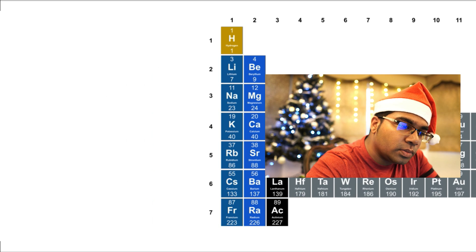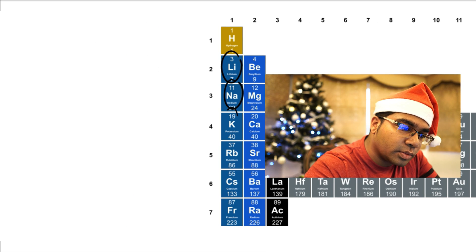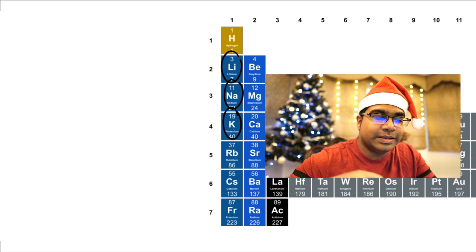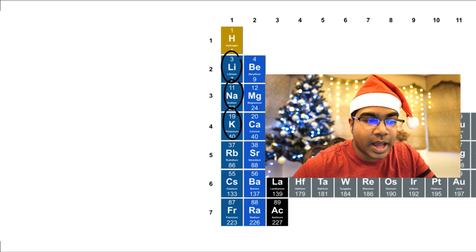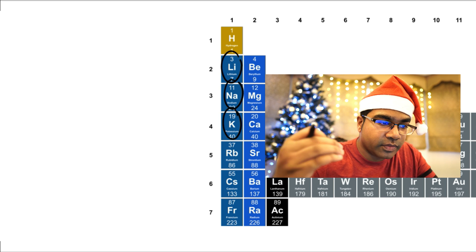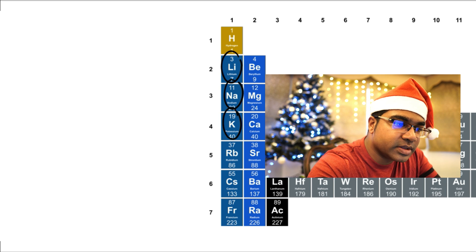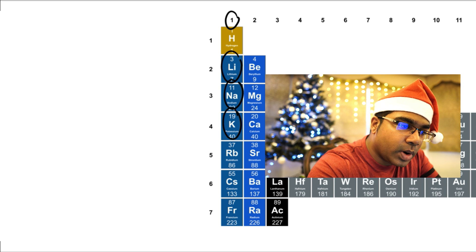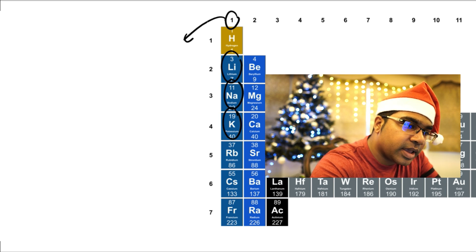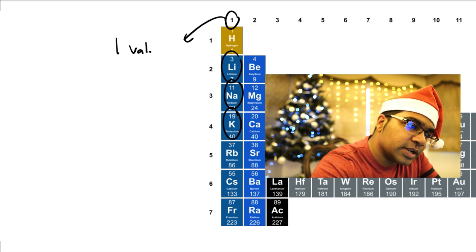When determining the charges of monoatomic ions, we are going to make use of the group. Let's take a look at group 1 elements. In group 1, we have lithium, sodium, and potassium. These are the common ions formed from group 1 elements. Group 1 elements have one valence electron.